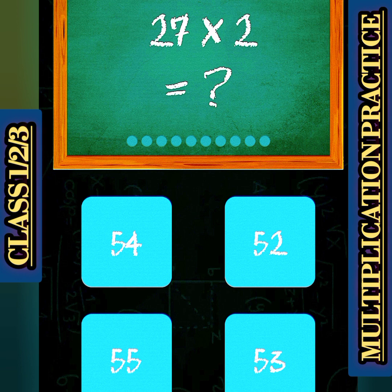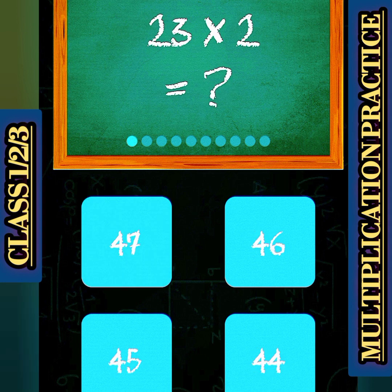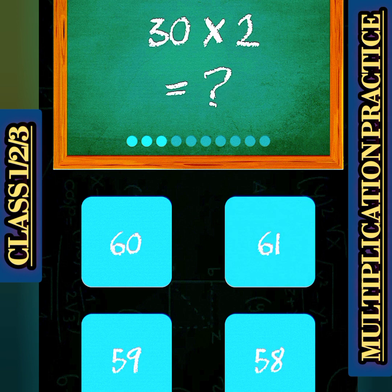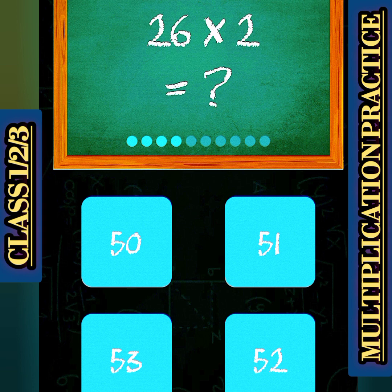27 multiply 2 — अगर आप 27 को 2 से multiply करते हो, तो आपको टेबल लर्न है तो मुझे प्राबलम नहीं है, लेकिन अगर टेबल लर्न नहीं होगे तो आपको multiply करना है। 23 multiply 2 क्या हो जाएगा — 46. 22 multiply 2 — 44. 26 x 2 क्या हो जाएगा — 52.